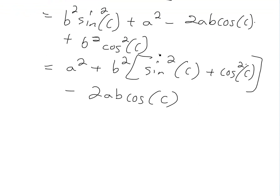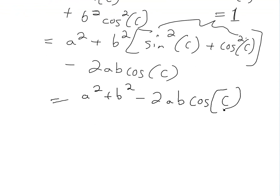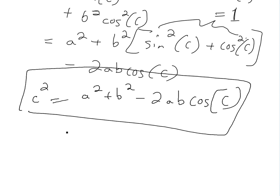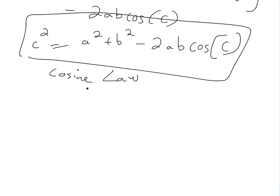As shown in another video, sine squared plus cosine squared equals 1. So if we apply that identity, we're just left with C squared equals A squared plus B squared minus 2AB cosine C. And that's the cosine law — that's the proof of it.